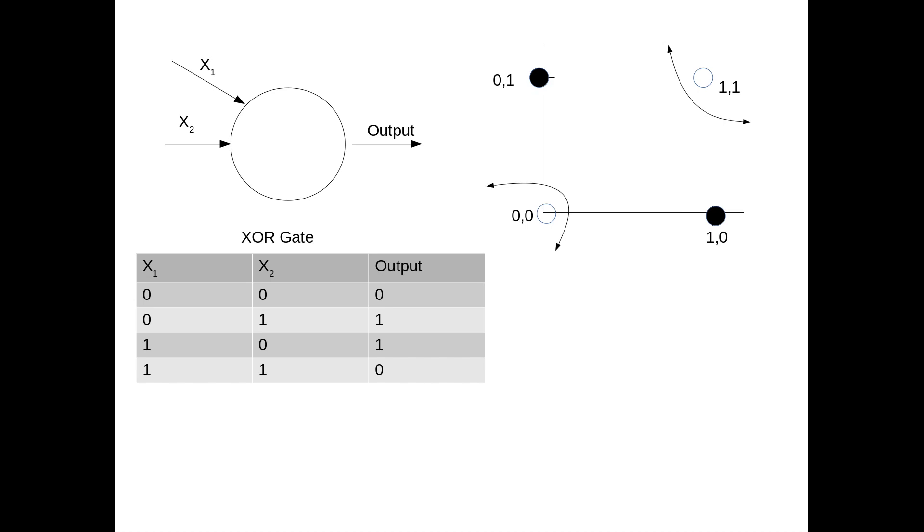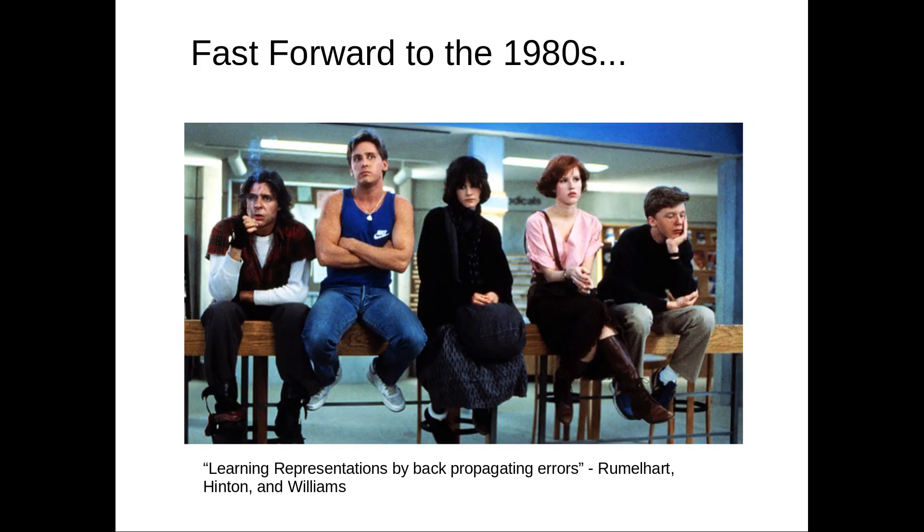This is kind of where artificial neurons and thinking machines died for a while until the 1980s. Let's fast forward to the 1980s. Rummelhart, Hinton, and Williams wrote this paper called Learning Representations by Backpropagating Errors. This is really important because this let us stack perceptrons on top of each other.